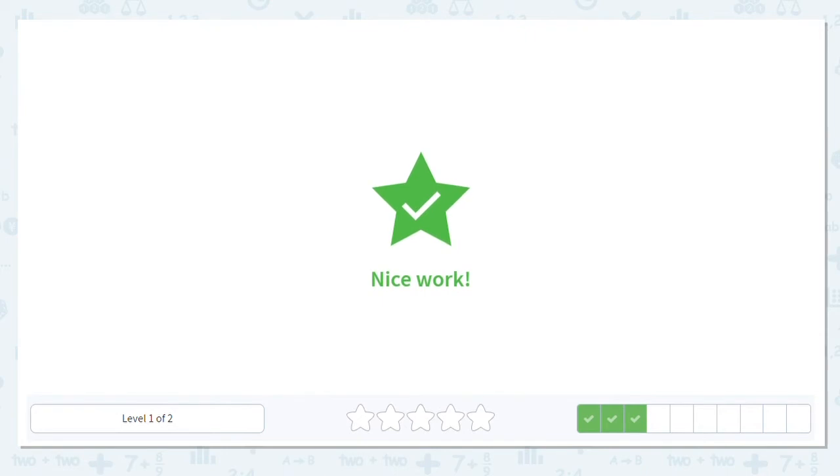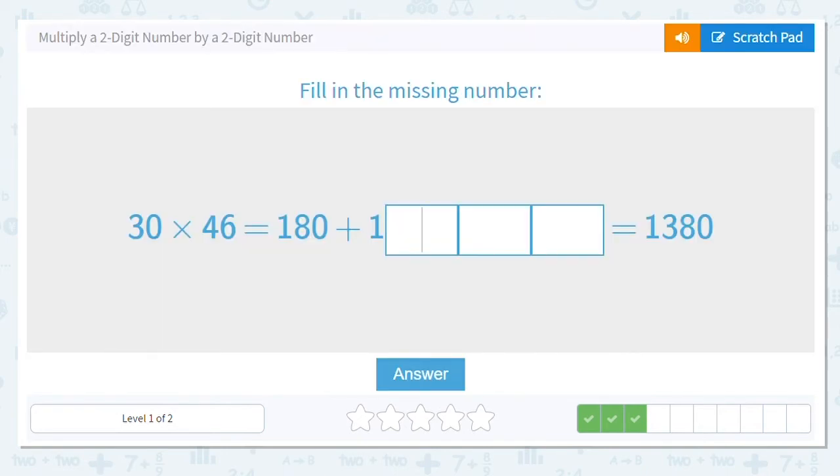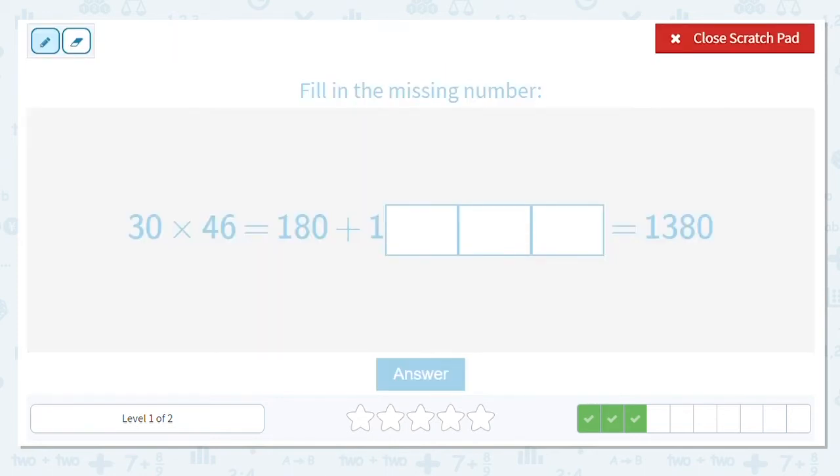Next one, we have 30 times 46 equals 180 plus something equals 1,380. So we have 30 times 46. We know our first partial product is 180.